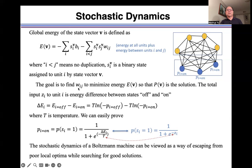Our goal is to find wij to minimize energy E so that p is the solution. The total input zi to unit i is the energy difference between states off and on, namely, the energy difference is equal to energy when state is off minus energy when state is on.